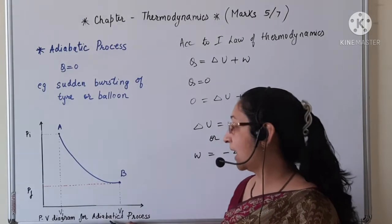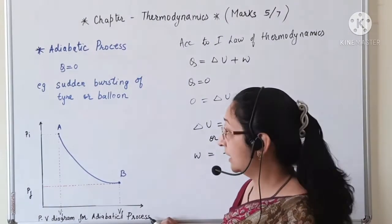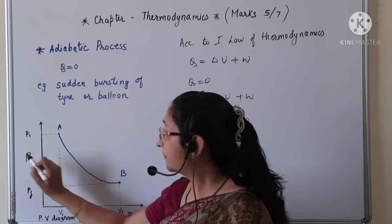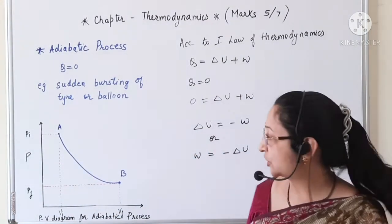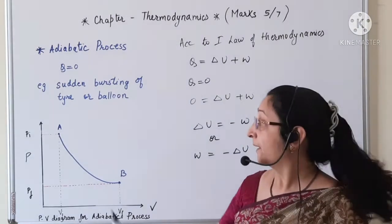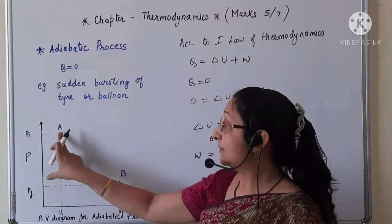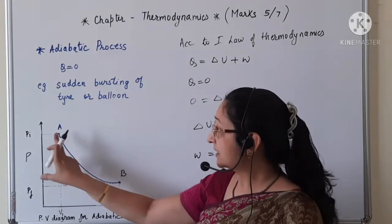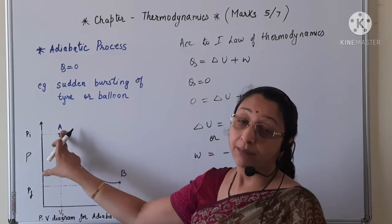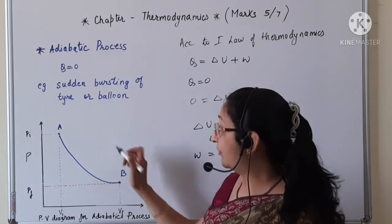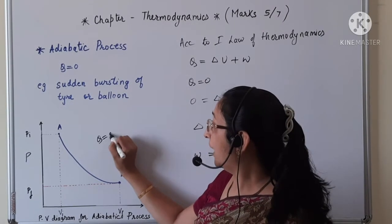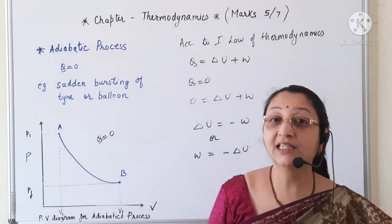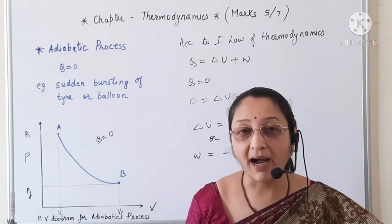Now this is the PV diagram for an adiabatic process. The y-axis represents pressure and the x-axis represents volume. The system moves from point A to point B, that is from the initial state (Pi, Vi) to the final state (Pf, Vf), but no energy is supplied or released by the system.